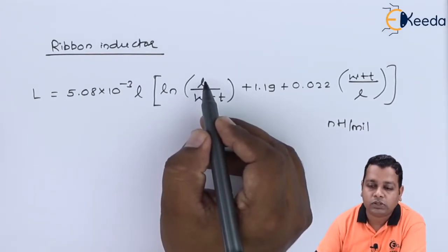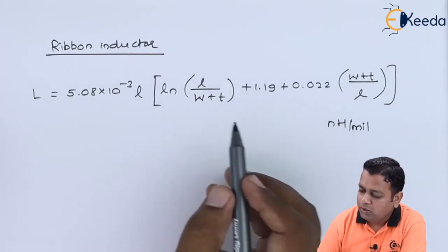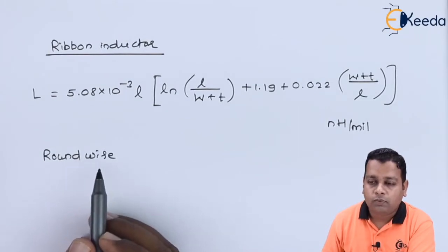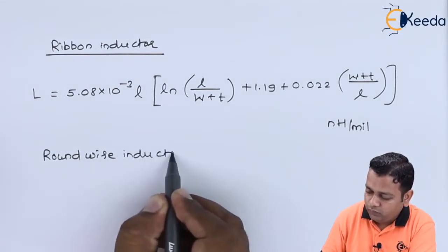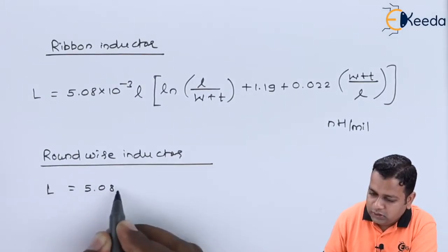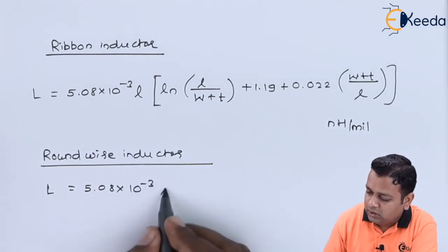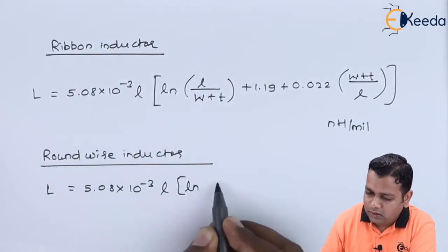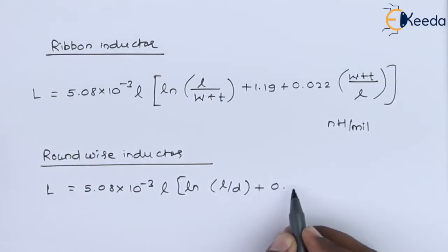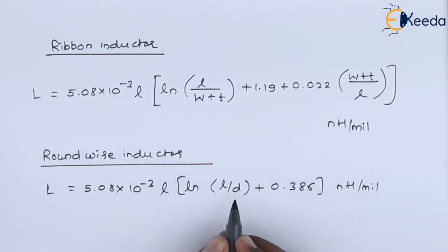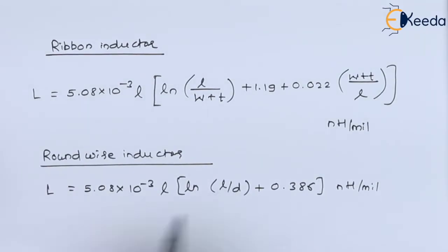Here small l corresponds to the ribbon length in millimeters, smaller t is the ribbon thickness, and the width is represented by W. For the round wire inductor, the inductance L is computed as: L equals 5.08 times 10 to the power minus 3 times small l, multiplied by the square bracket containing ln of (l divided by d) added to 0.386, in nanohenry per millimeter. The smaller d is the diameter of the round wire in millimeters, and small l is the length in millimeters.